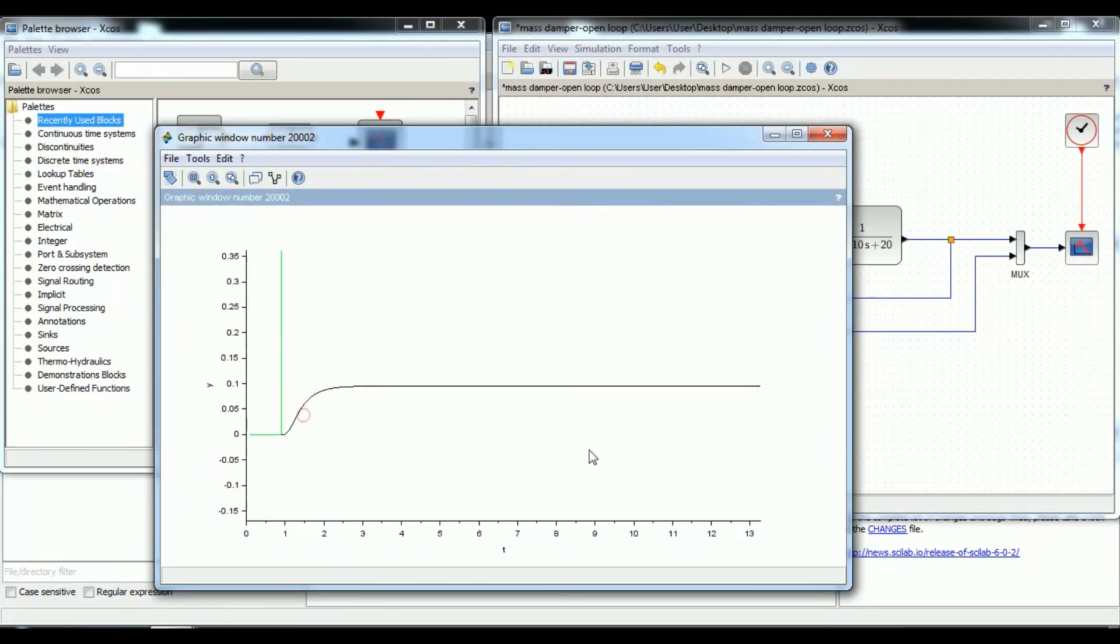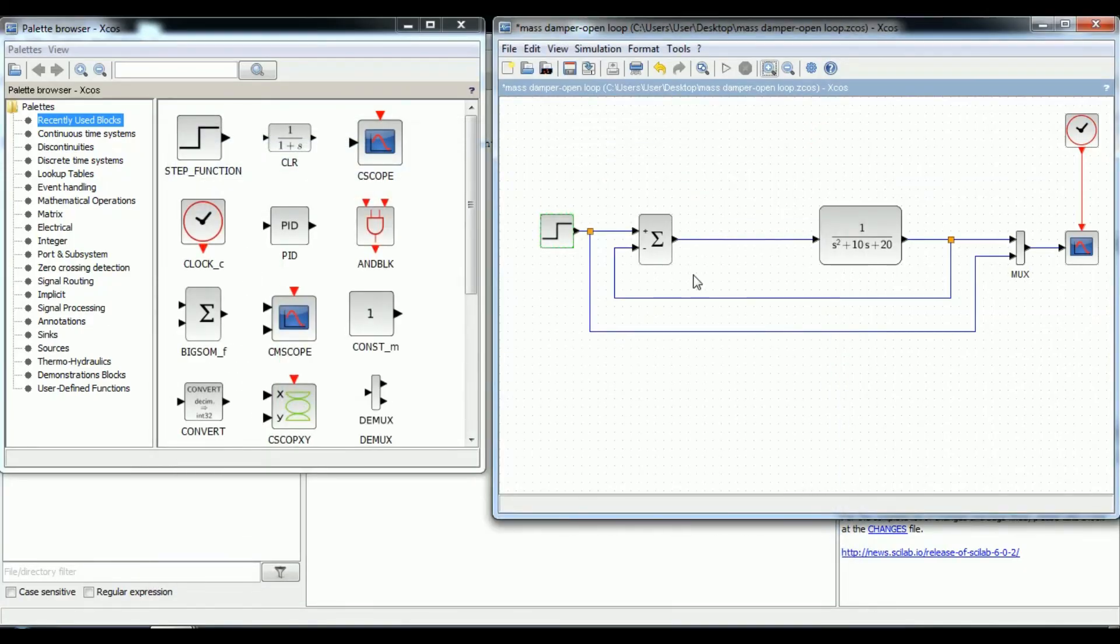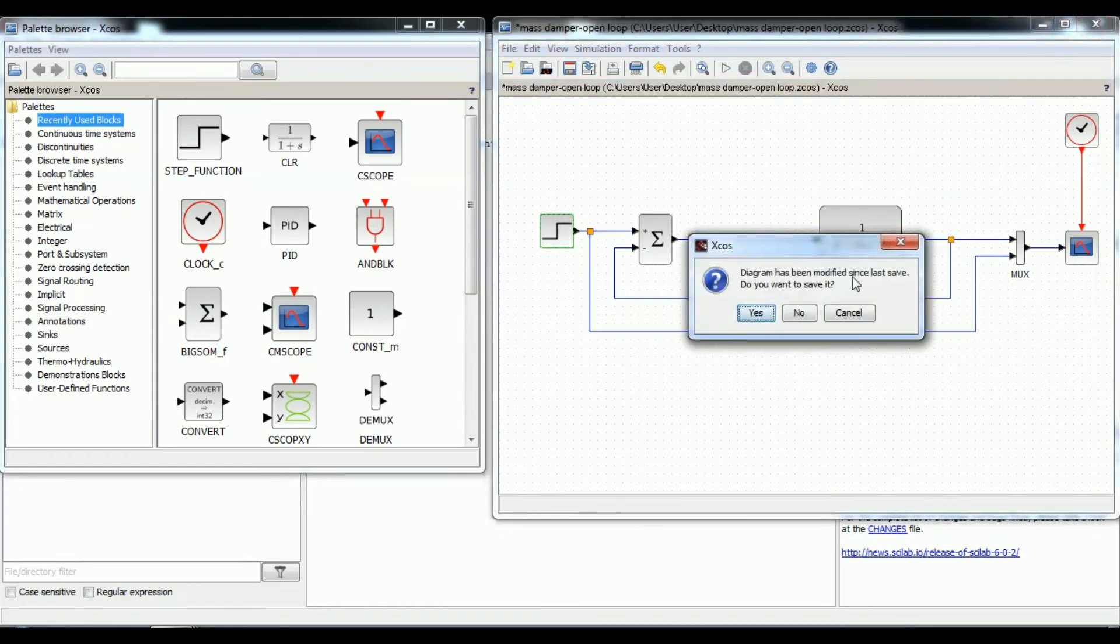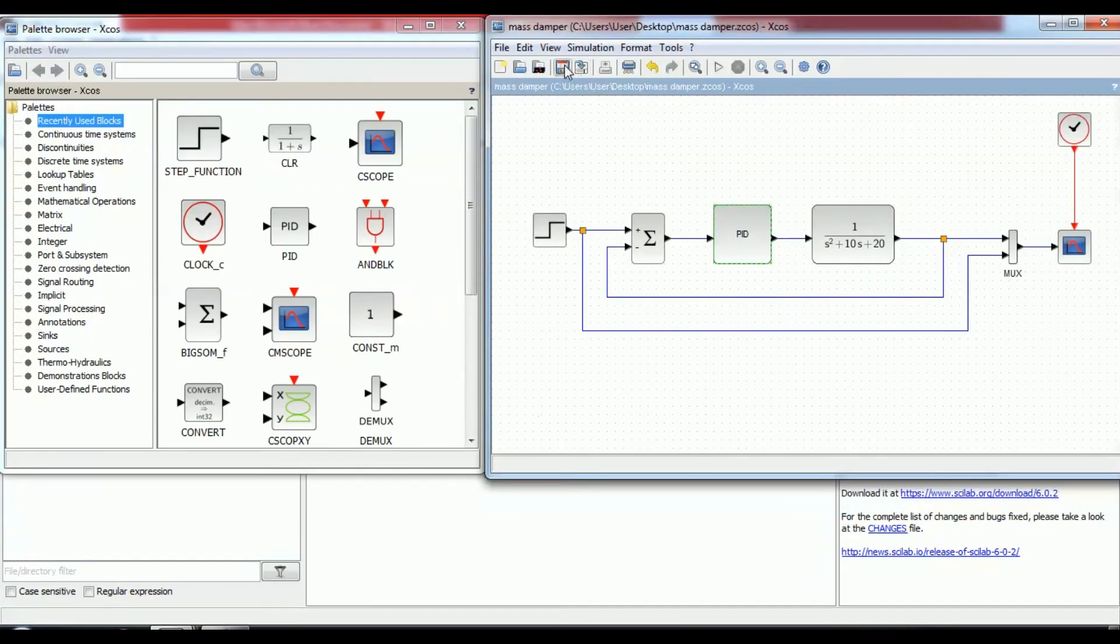This corresponds to steady state error of near about 0.95 which is quite large. Furthermore, the rise time is about one second and the settling time is about three seconds. So let's design a controller that will reduce the rise time, reduce the settling time, also eliminates the steady state error. Let us try to add the proportional controller.